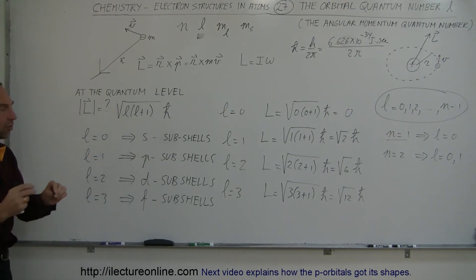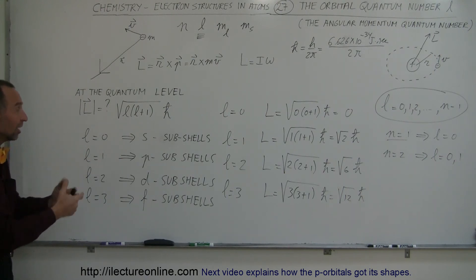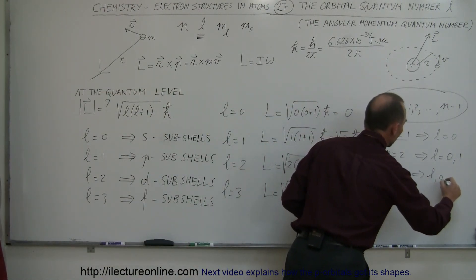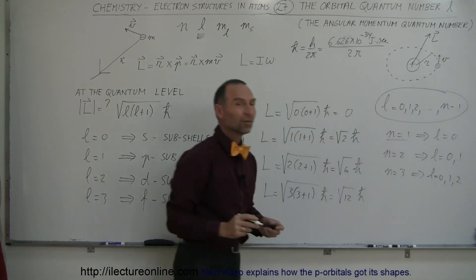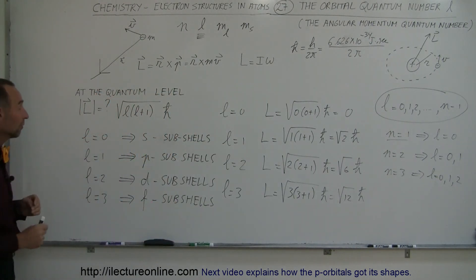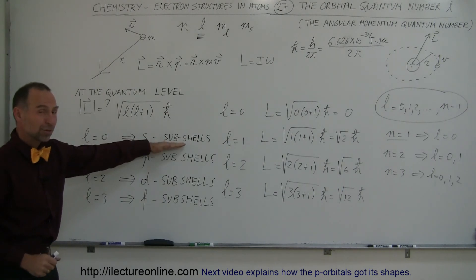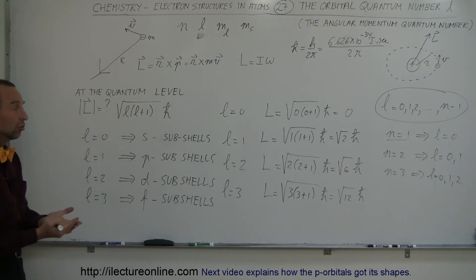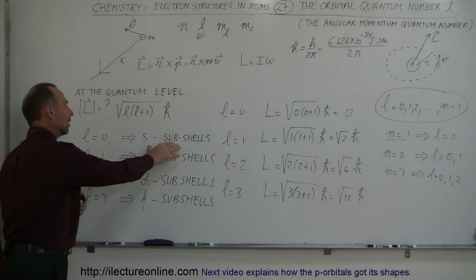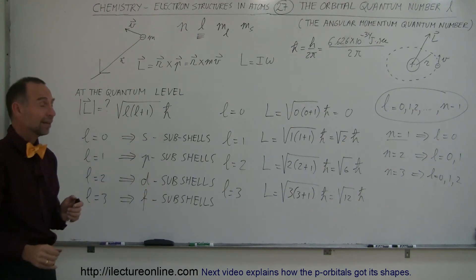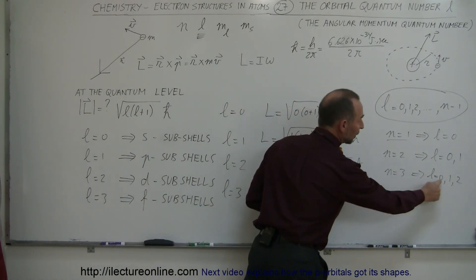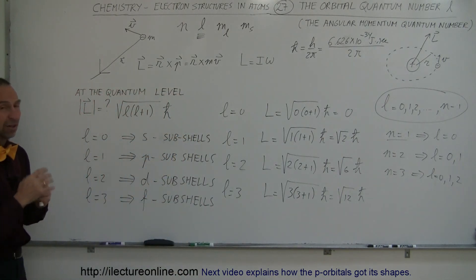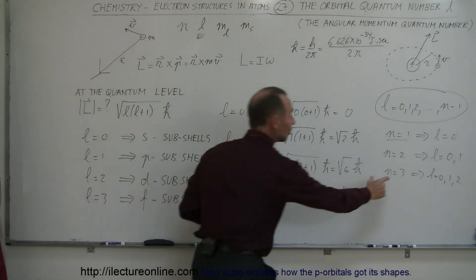At the third energy level, n equals 3, L can be 0, 1, or 2, meaning s orbitals, p orbitals, and d orbitals are all possible. The more orbitals you can have, the more electrons you can fit at that energy level. The s orbital holds 2 electrons, p holds 6, and d holds 10. So at the third energy level you can have 2 plus 6 plus 10, which is 18 electrons.